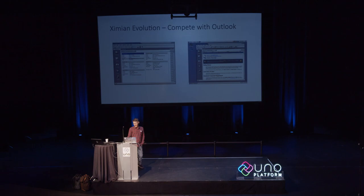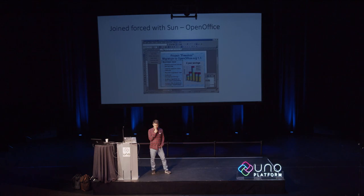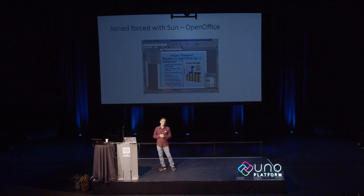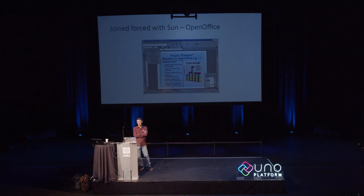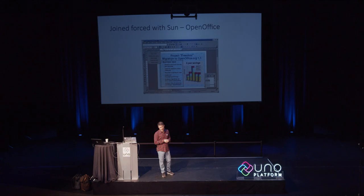We came up with an agreement with Sun: we said, why don't you open source OpenOffice? They said we'll do it on the condition that you kill Gnumeric. We agreed to stop developing Gnumeric, and they open-sourced OpenOffice — now called LibreOffice. What I didn't count on was that people just took Gnumeric and kept going with it; it's still being developed today, and the statistical functions are better than anything else out there.